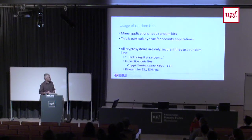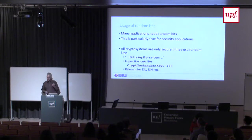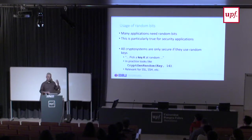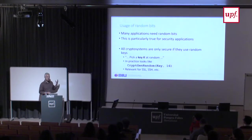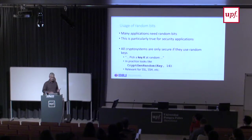If someone can tamper with the generation of random numbers, or if the operating system doesn't provide secure, truly random numbers, then all the constructions based on random numbers are insecure. If the source of random numbers used by computers is insecure, then all the cryptographic constructions we build on top of it are insecure.